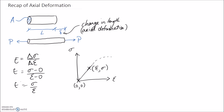Now I want to substitute things in for stress and strain to develop other relationships. For normal stress, we know it's equal to force divided by cross-sectional area — so the force is P and the cross-sectional area is A. The other substitution is for strain, which is equal to the change in length divided by the initial length. The change in length is our axial deformation delta, and the original length is L.